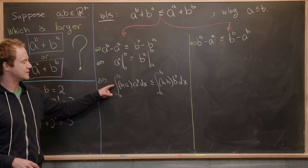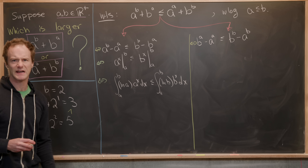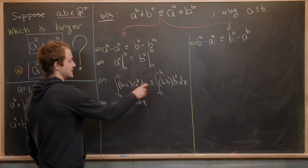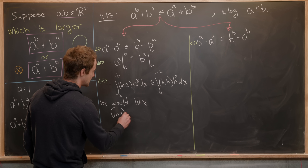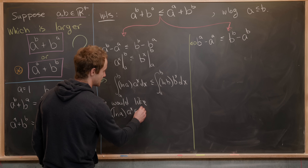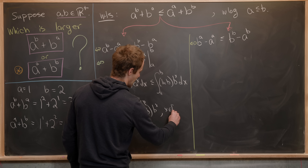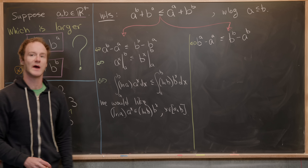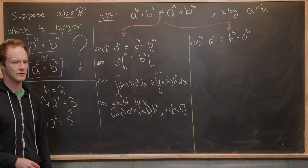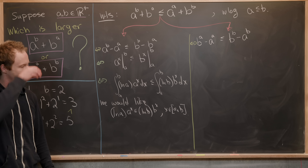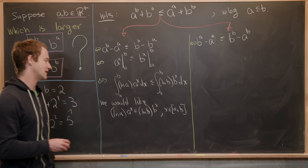This integral inequality follows quickly if the two integrands satisfy the same ordering. That is, ln(A) times A to the X is less than or equal to ln(B) times B to the X for all X on the interval from A to B. This is hard to prove in general, but it works if we fix B to have a certain size — specifically, B greater than or equal to one.